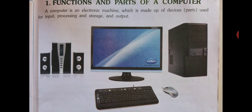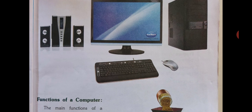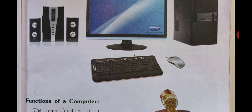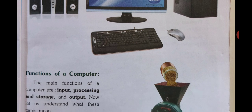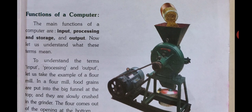Niche dekhe ye jo diagram di hui hai — is se pata chalta hai pura computer ka setup kaisa hota hai. Pehla speaker hota hai, dusra hai monitor — TV ki jaise screen. Bada wala dabba jo dikhta hai woh CPU hai. Uske baad jo sabke ghar mein computer ke saath hota hai — niche wala keyboard aur mouse.